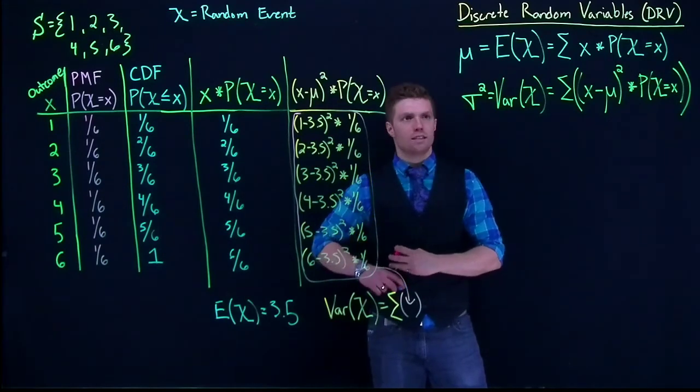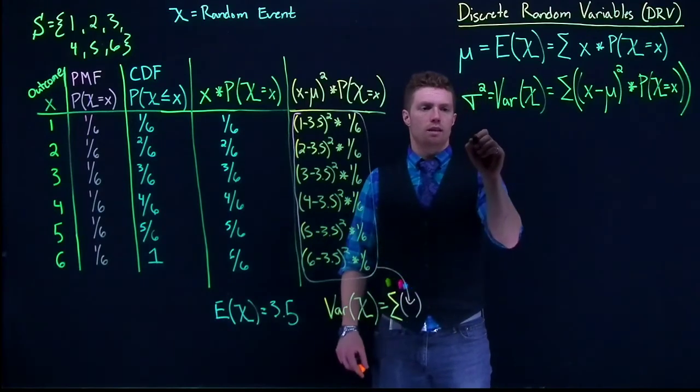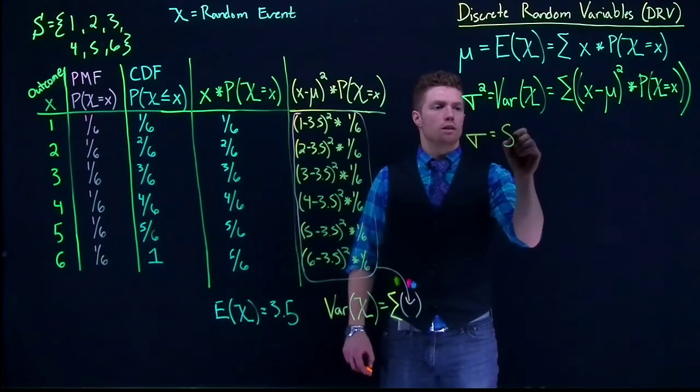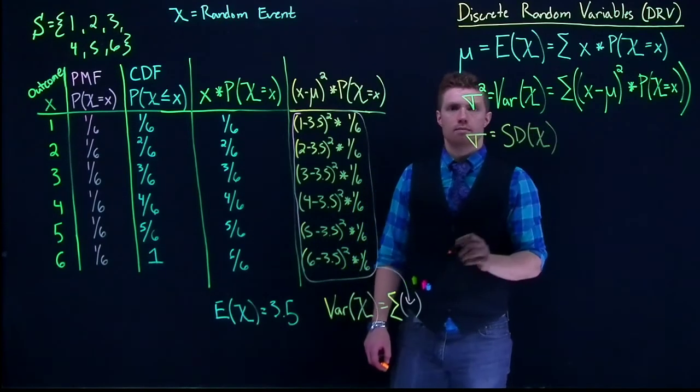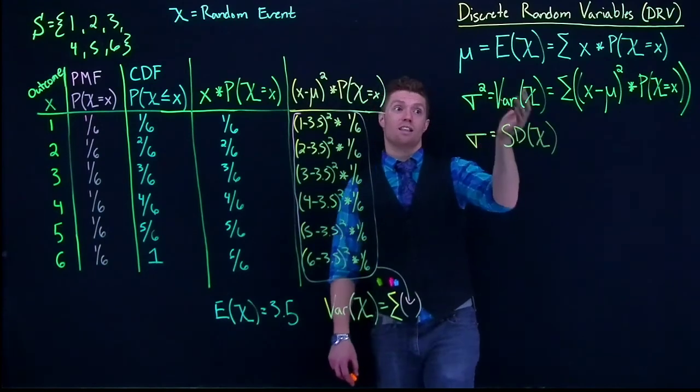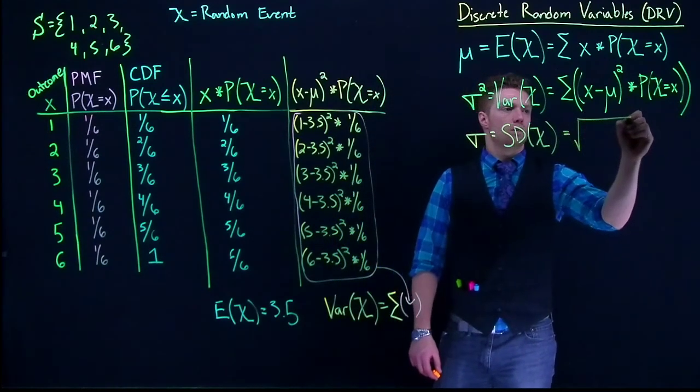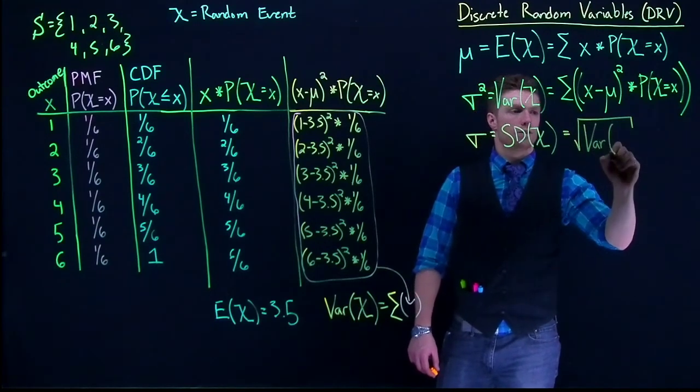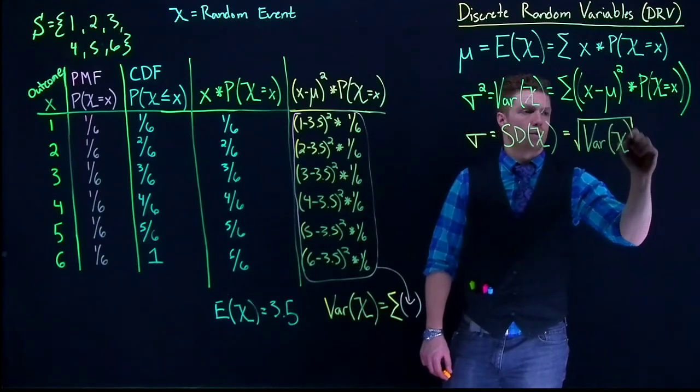And then the last thing is that oftentimes we don't want the variance. We want to know what the standard deviation is, or the standard deviation of x. And this one, thankfully, is easy. If we calculated out the variance, all this is equal to is the square root of the variance of our random variable.